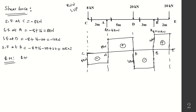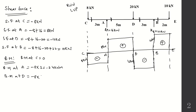Now for bending moment calculations. Bending moment at C = 0 (no perpendicular distance). Bending moment at A: 8 kN acts downward to the left, creating a hogging (negative) moment: −8 × 3 = −24 kNm. Bending moment at D: −8 × 8 + 16 × 5 = −64 + 80 = +16 kNm (sagging, positive).